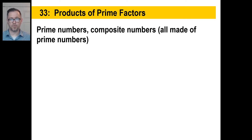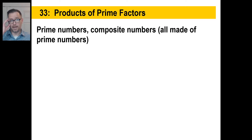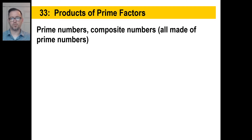The smallest prime number is two. Then the next prime number is three, then five, then seven, then 11, then 13, and so on. In other words, you're talking about numbers that don't have any other factors at all except for themselves and one. Now two is an even number — it is the only even number that is a prime number.